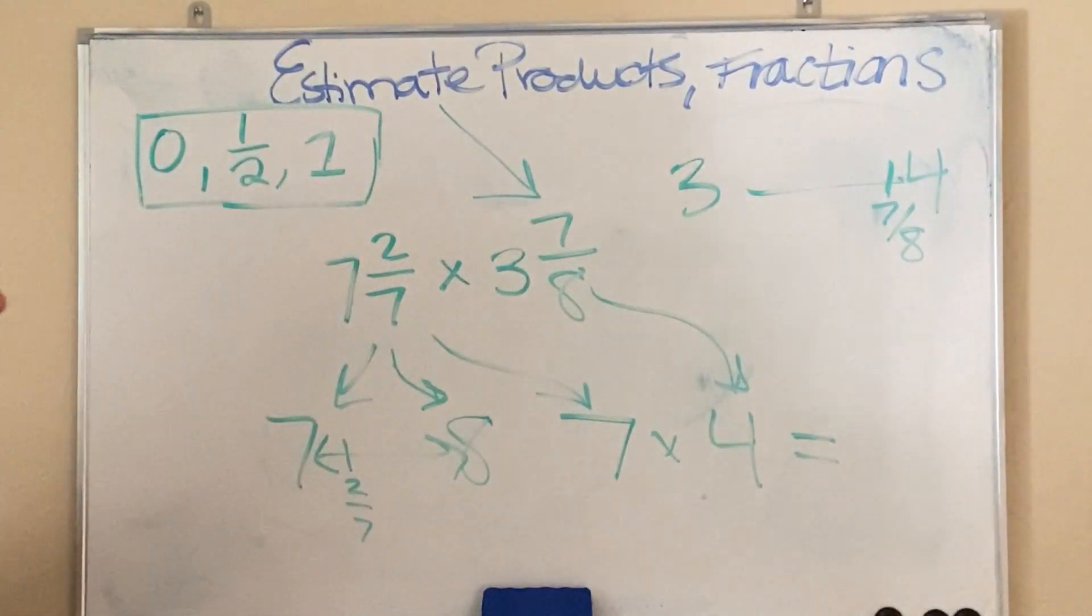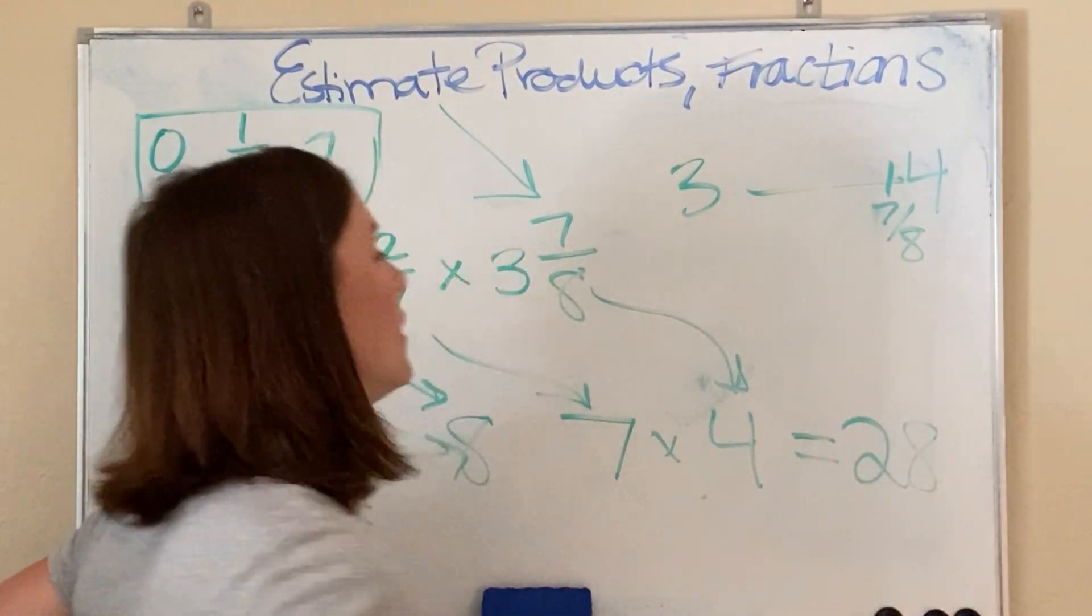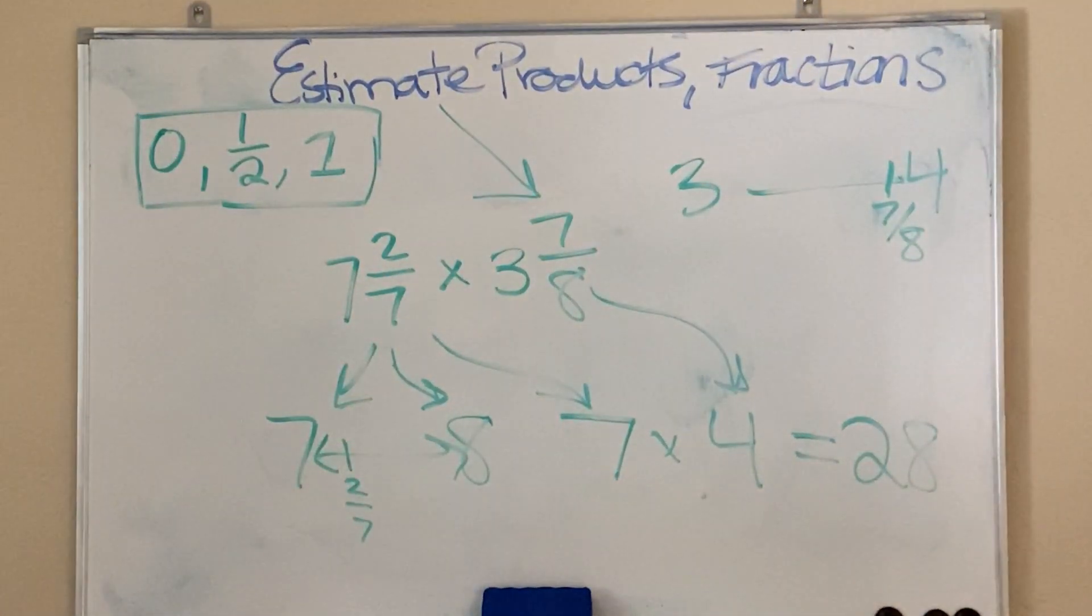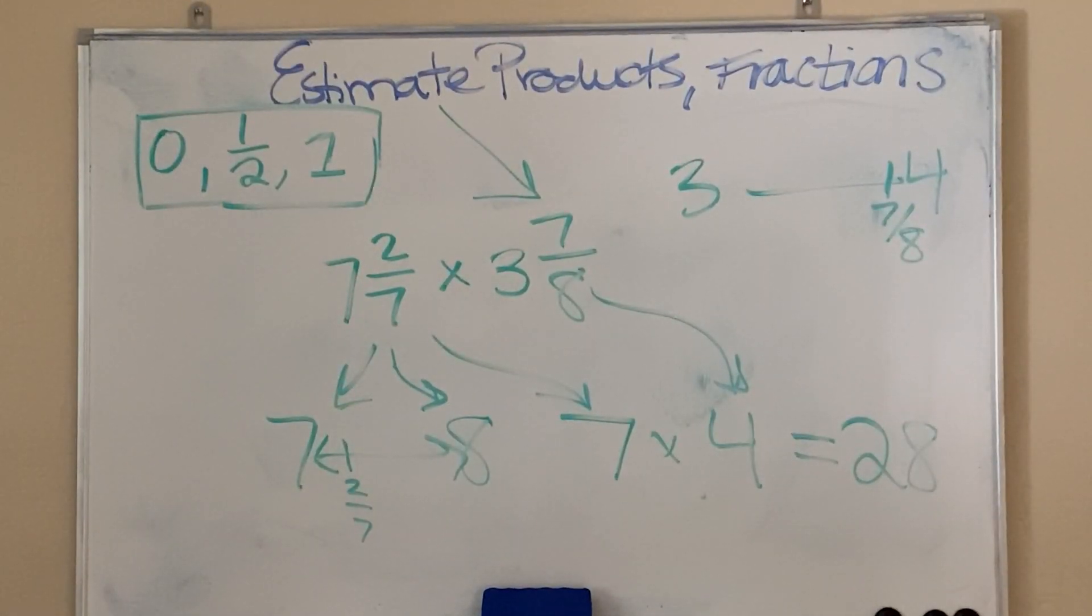And now, we can just multiply. 7 times 4 is 28. All right, you guys. So, you have what you need in order to estimate the products of fractions. Please make sure you watch it as many times as you need. And good luck.